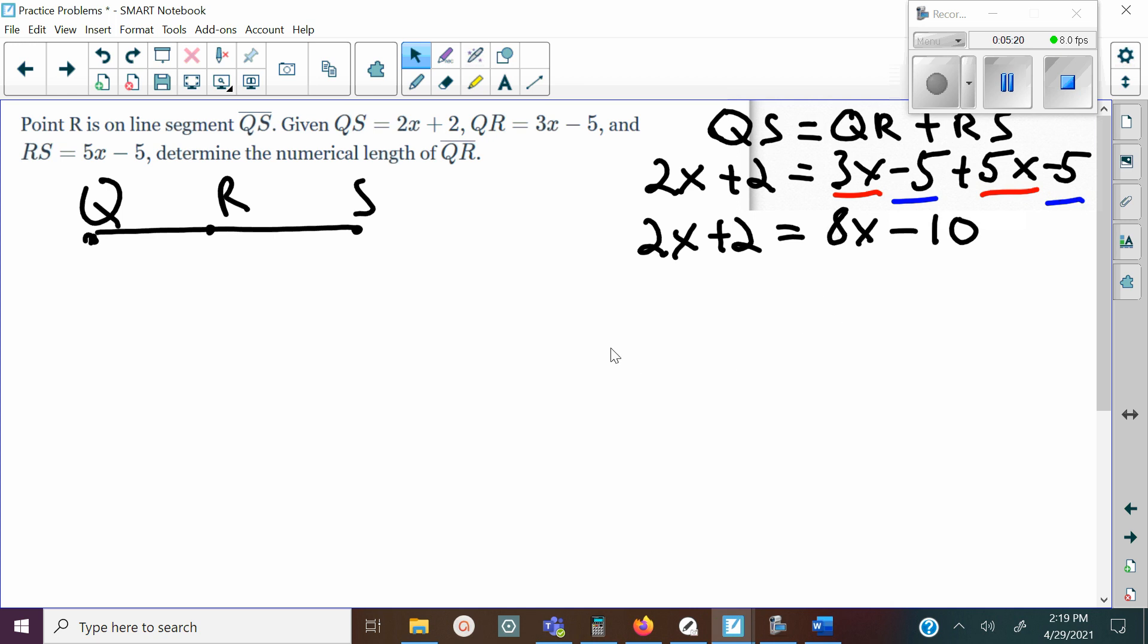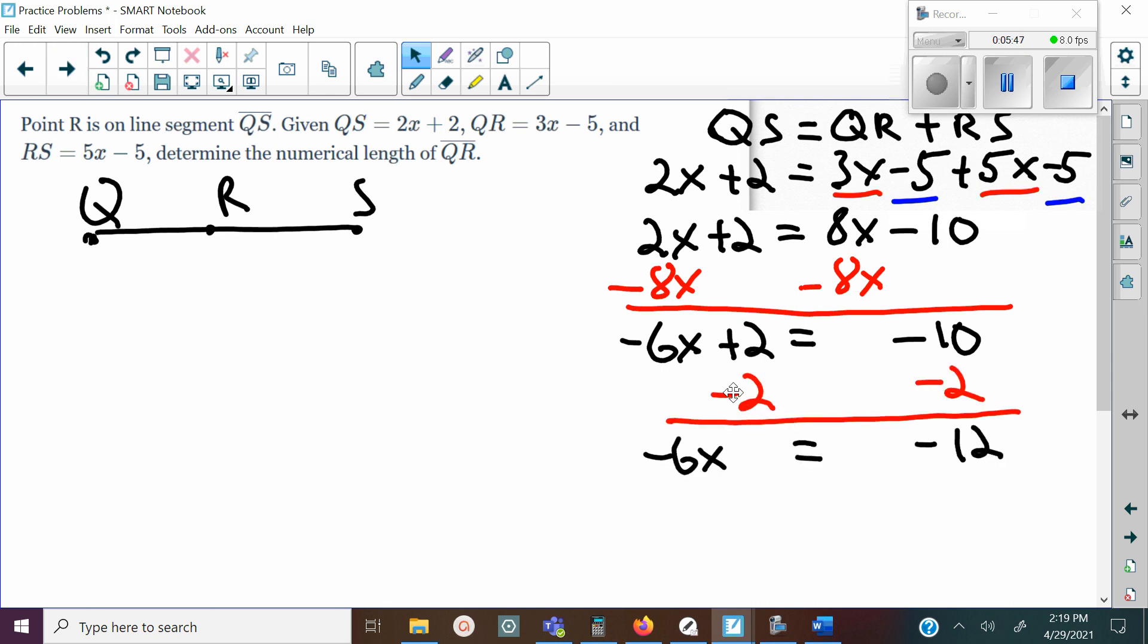I'm going to move the variable to the left by subtracting 8x on both sides. That's going to give me -6x + 2 = -10. A positive plus a negative, different signs, find the difference, subtract 6, negative 6. Then I'm going to subtract the 2 on both sides. Same sign, find the sum, 10 plus 2 is 12, keep it negative.